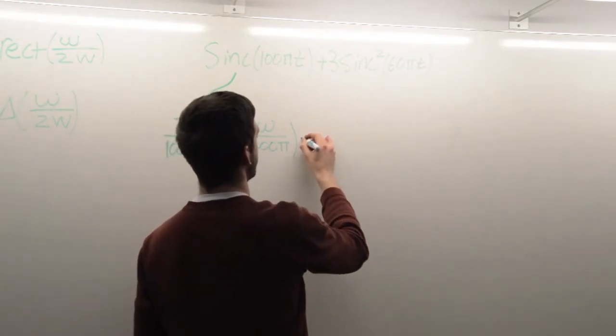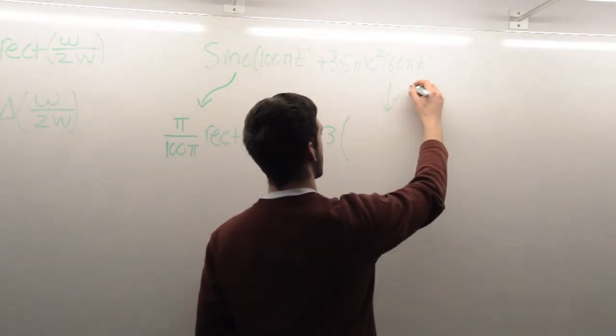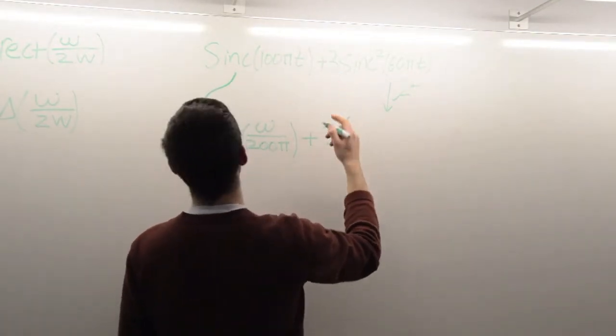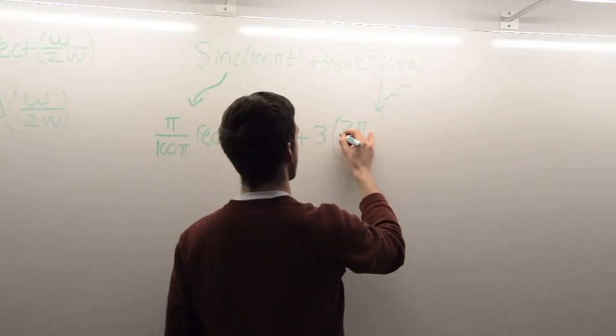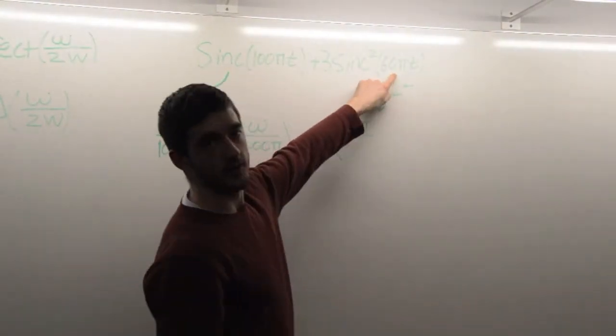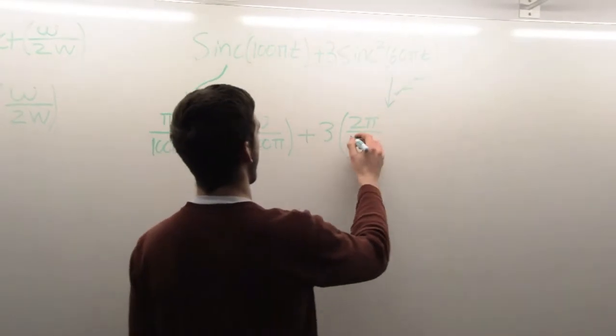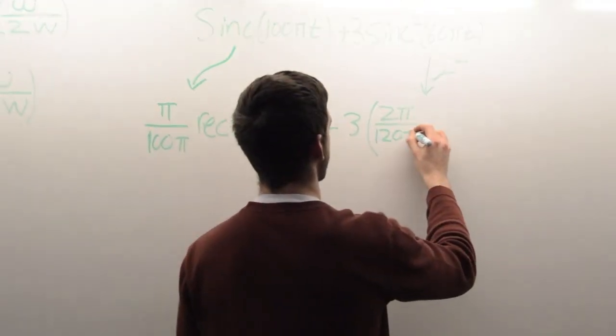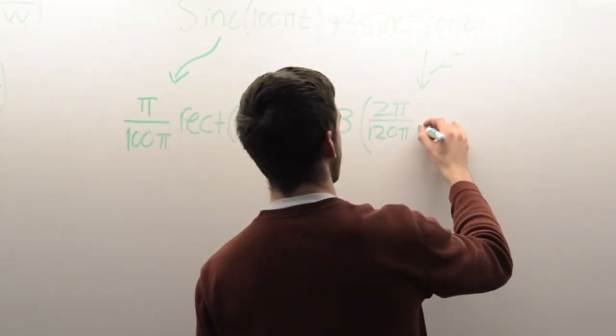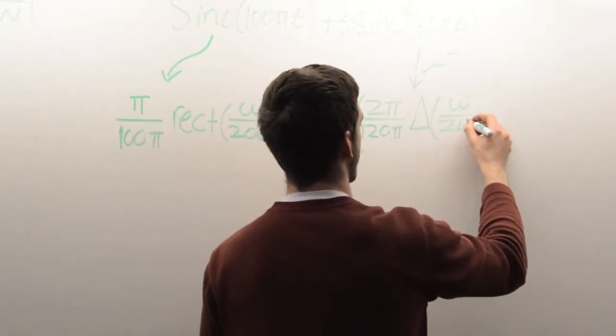The Fourier transform comes out to be 2 pi over w. And w, in this case, remember we have this right here is wt over 2, so really w is 120 times pi. So we're going to have 2 pi over 120 pi, and that's going to be multiplied by the triangle function of omega over 2 times w, which is 240 pi.